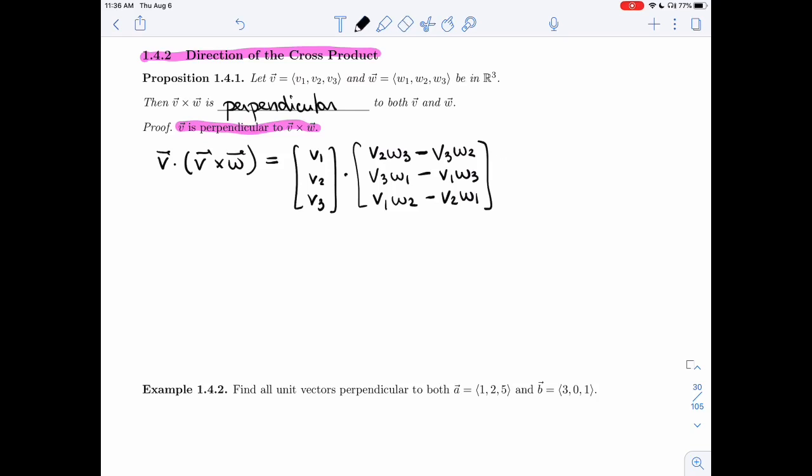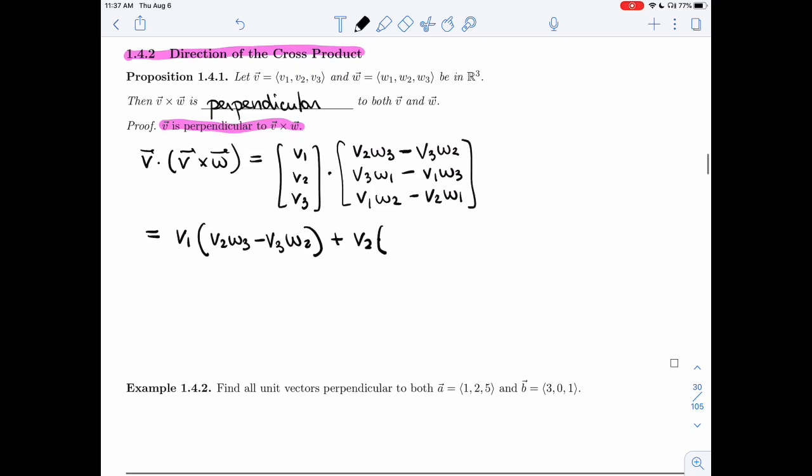I'm going to have multiple terms. Let's write it here. I'm going to have V1 times V2 W3 minus V3 W2. I'm going to have V2 times, sorry, no dot product, V3 W1 minus V1 W3. And my last component is going to give me V3 times V1 W2, V2 W1.